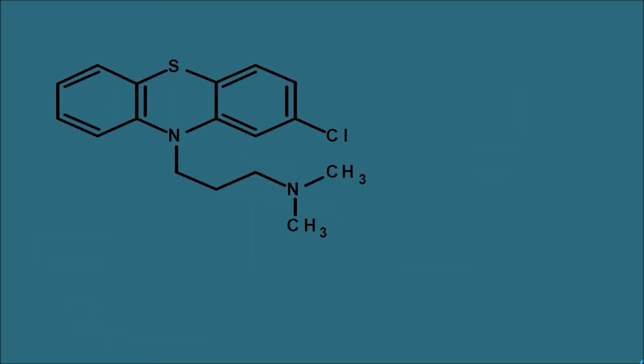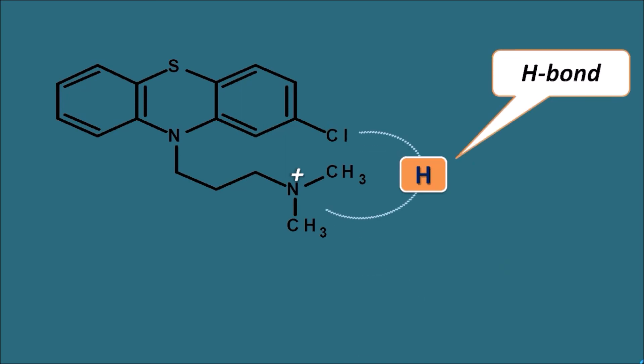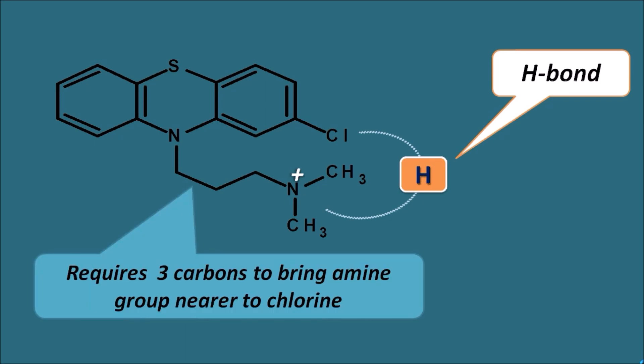Why is three carbons the optimal distance? When chlorpromazine is given in vivo, it can be protonated and converted into a quaternary ammonium salt, where nitrogen carries a positive charge. It can then form a hydrogen bond with the chlorine at the second position. The side chain requires exactly three carbons to bring the amine group close enough to the chlorine to form this hydrogen bond. If the chain is greater or less than three carbons, the amine cannot reach the group at the second position and no hydrogen bond forms. Formation of this hydrogen bond is essential for the activity of phenothiazines.